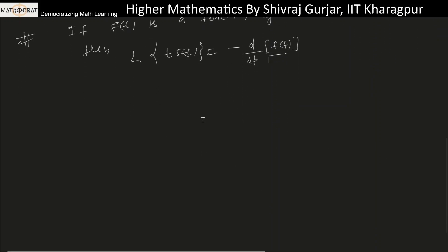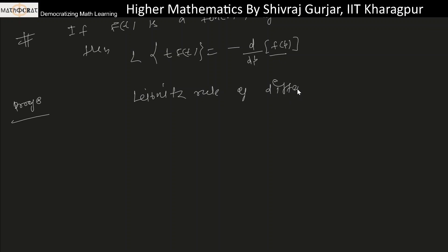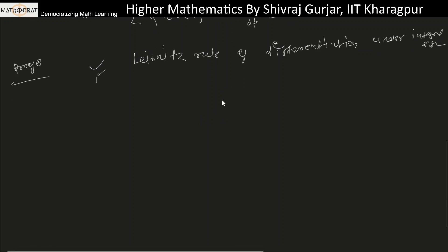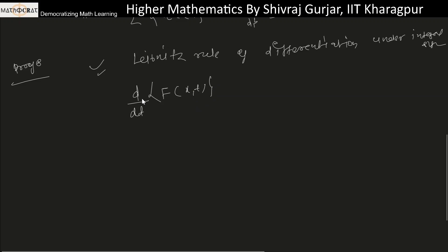To prove this, we should know Leibniz's rule of differentiation under the integral sign. This rule was a favorite in JEE exams. We are differentiating a function f(x, t) with respect to t — basically differentiating a function under an integral sign with variable upper and lower limits g2(t) and f1(t), where the integrand is a function of x and t.